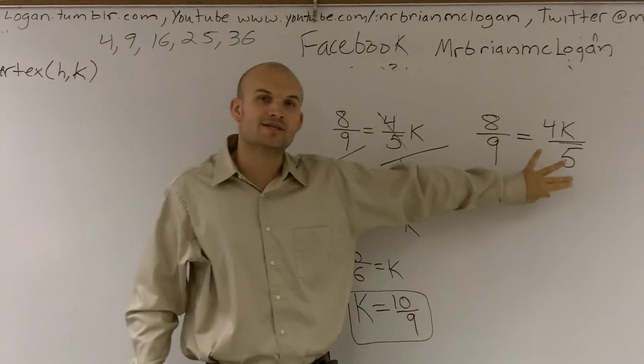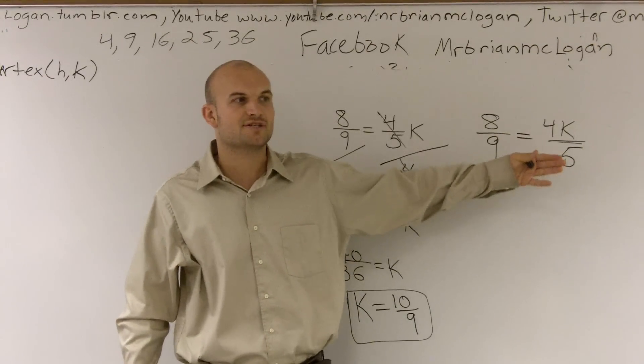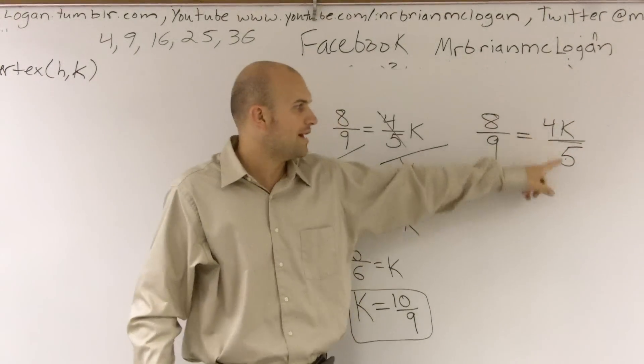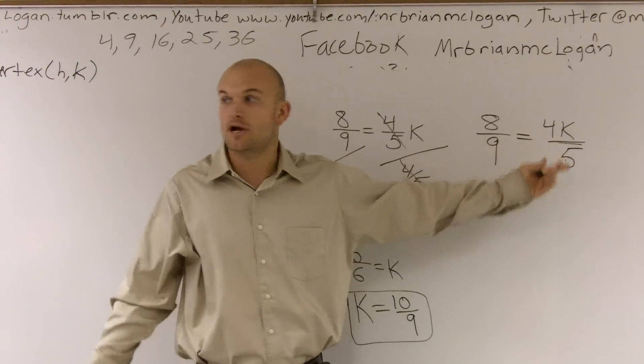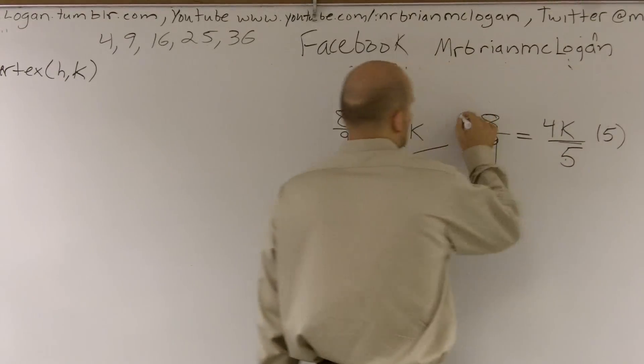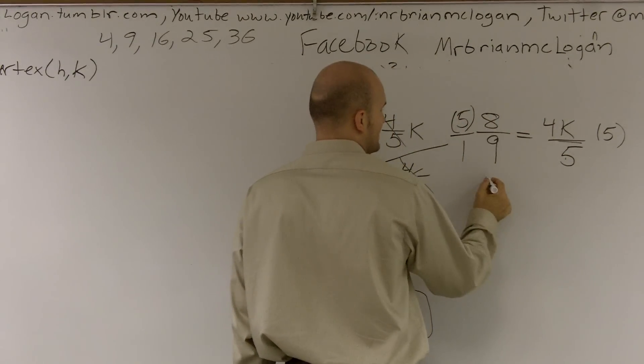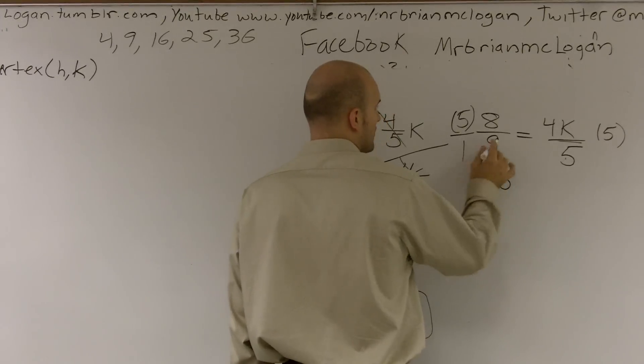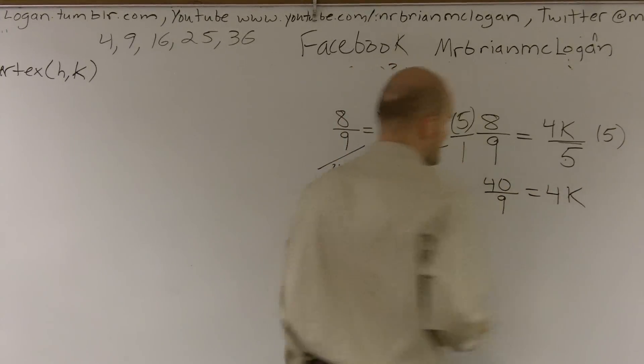So what's kind of nice about this is it's easy to determine the inverse operations, and then it's easy just to do the opposite. What is the five doing? The k is being divided by five. So to undo that, you multiply. And then remember, five times eight is 40, and one times nine is nine equals four k.